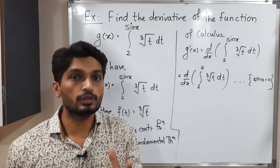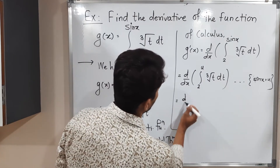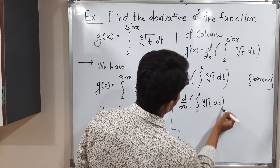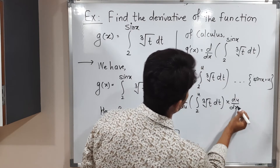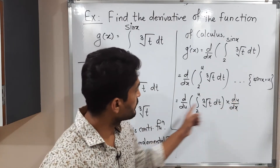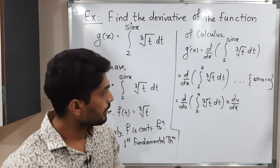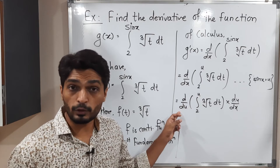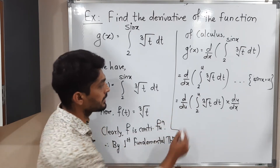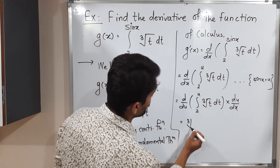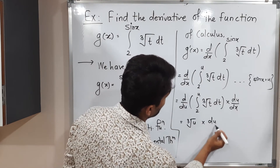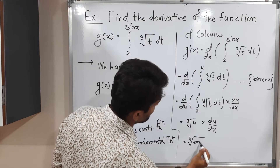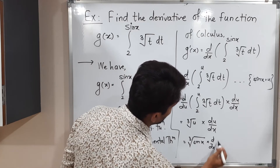We have a problem since now the variable is u and we are taking the derivative with respect to x. Since u is a function of x, we can use the chain rule. By the chain rule we write: derivative with respect to u of the integration from 2 to u of cube root of t dt, multiplied by du/dx. Now we can apply the First Fundamental Theorem of Calculus since the upper limit is u and we are differentiating with respect to u. The theorem says we simply replace t by u, giving cube root of u times du/dx. The value of u is sin x.